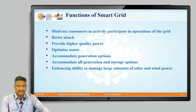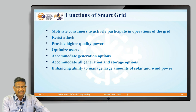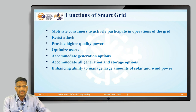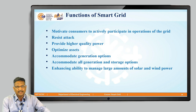More functions of smart grids include motivating consumers to participate in the operation of the grid by installing renewable energy sources such as rooftop solar photovoltaic systems. The grid must also resist attacks from different places that might threaten integration. It must provide high quality power, as star-rated appliances require quality power. Further functions include the possibility of energy saving, optimization of assets, accommodating all generator and storage options, and enhancing the ability to manage large amounts of solar and wind power in the form of renewable energy.